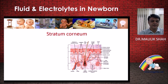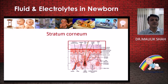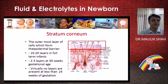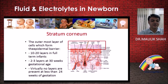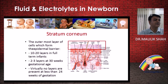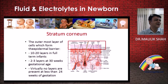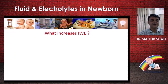The stratum corneum is the outermost layer of the skin. In full-term infants it is typically 10–20 layers; in adults about 20 layers. However, in a 30-week preterm baby, the stratum corneum is only one or two layers thick, and in a 24-week baby it is virtually absent — the skin is almost transparent. This means almost anything can exit through that skin barrier.